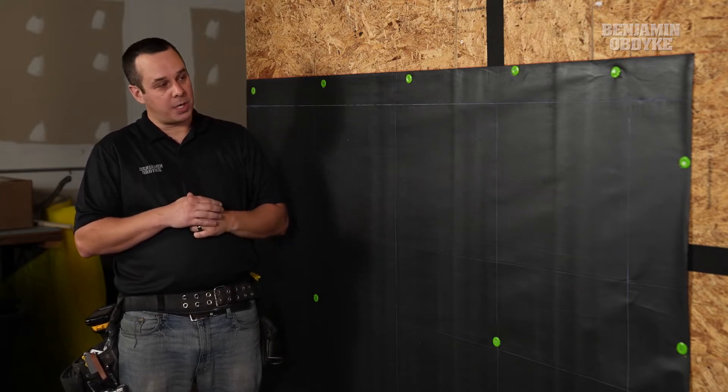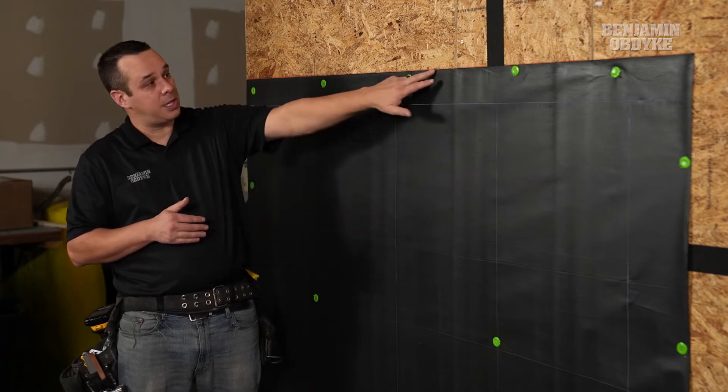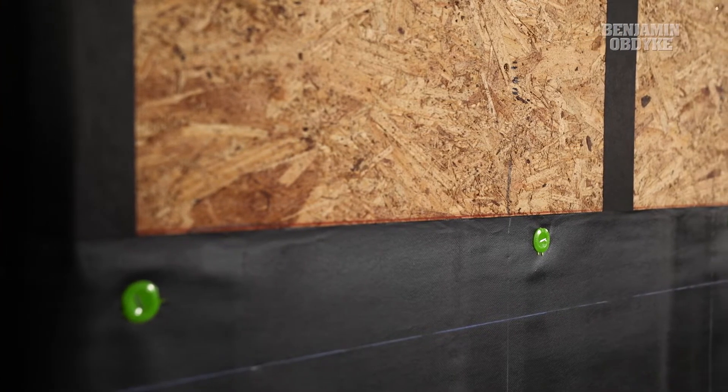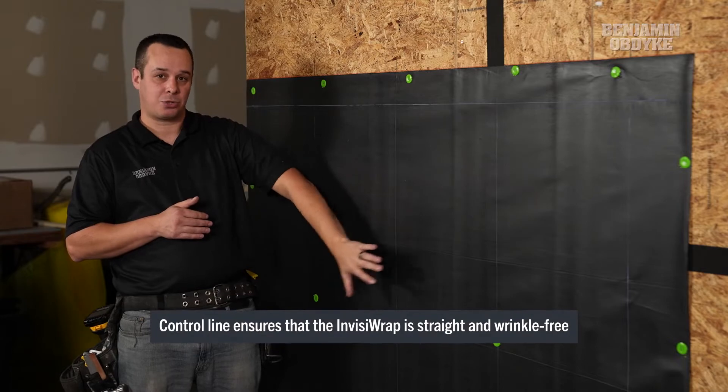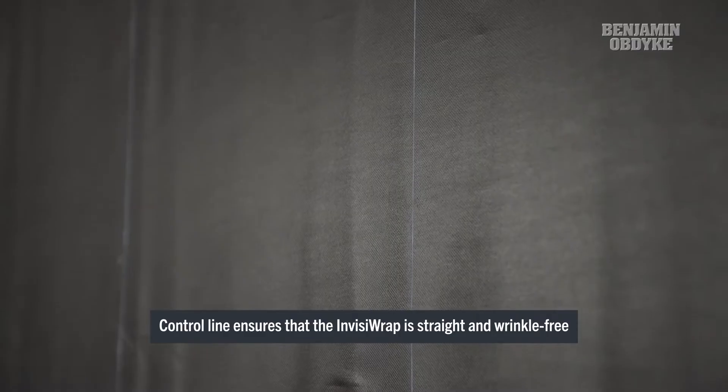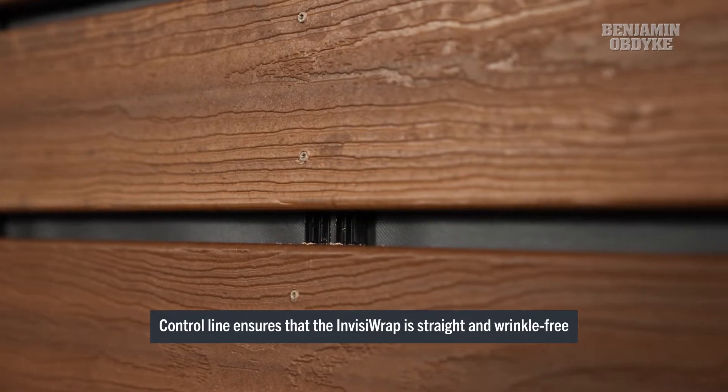When doing this, we want to use as many chalk lines as possible. You can see here we have a red chalk line that we put directly on our sheathing before the first course. That's going to ensure that we keep a nice straight product that prevents wrinkles and looks really good between those open joints.